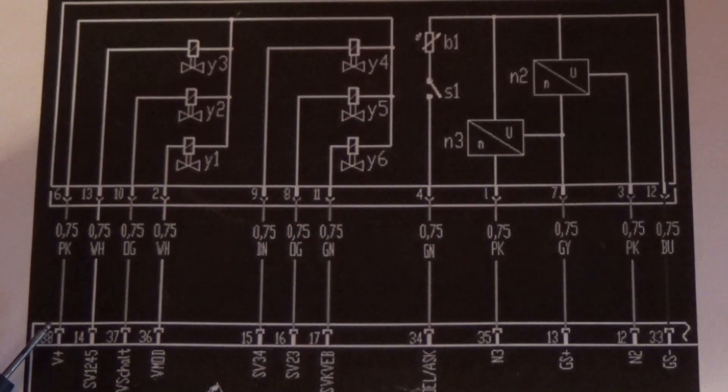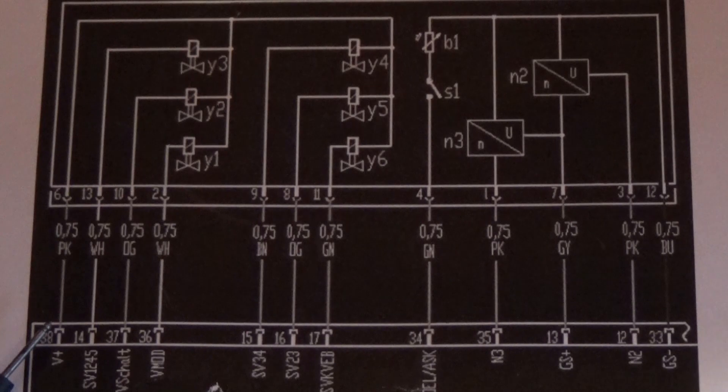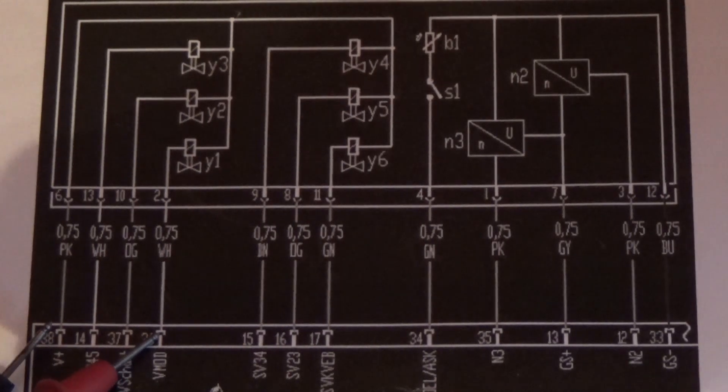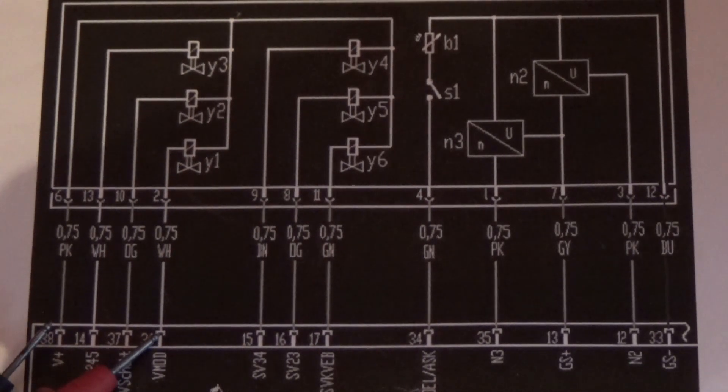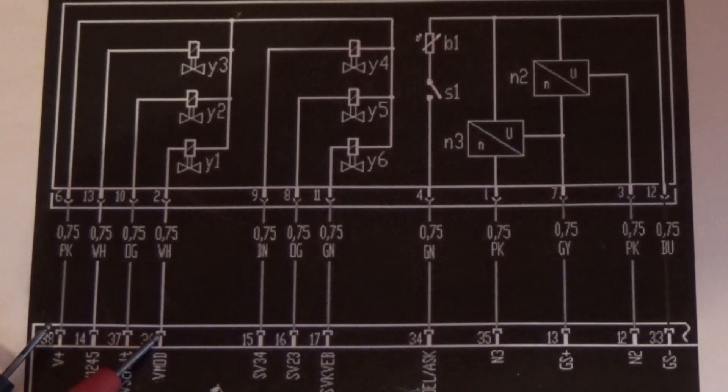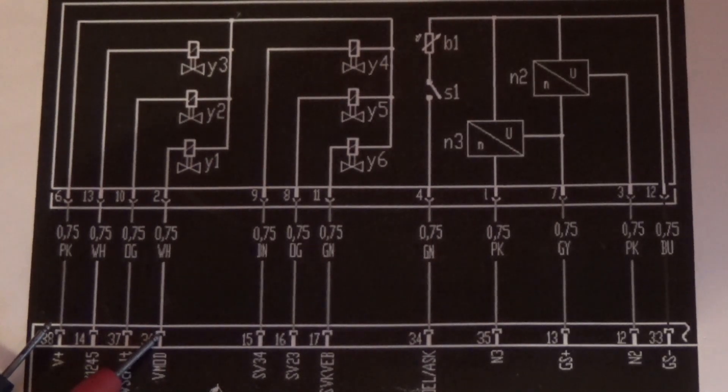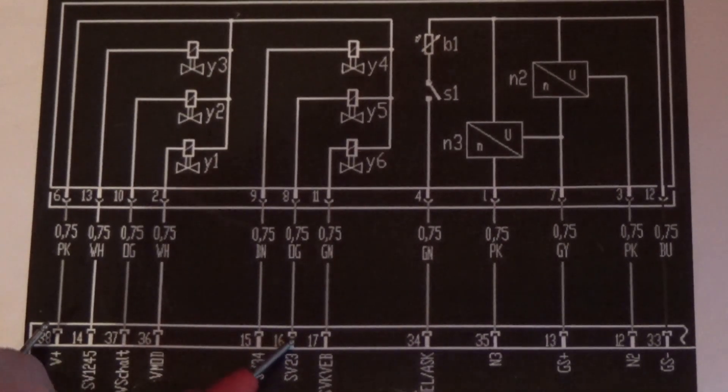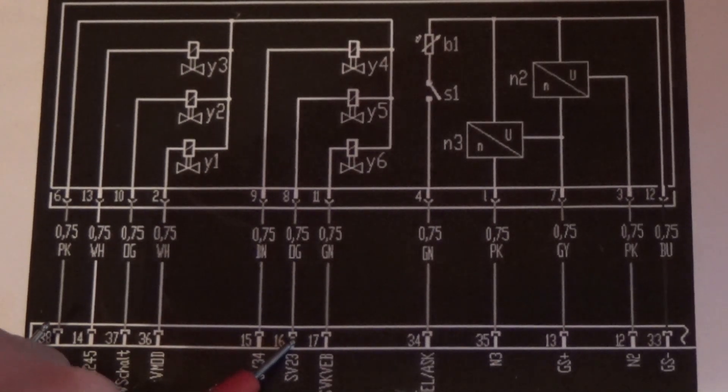So the first solenoid that we're going to test is the line pressure solenoid, and that is between 38 and 36, and we want to see 5.5 ohms. That number 5.5 ohms, that's a ballpark number. So the next one will be the 2-3 shift solenoid. Go to pin 16, right there. 4.5 ohms.